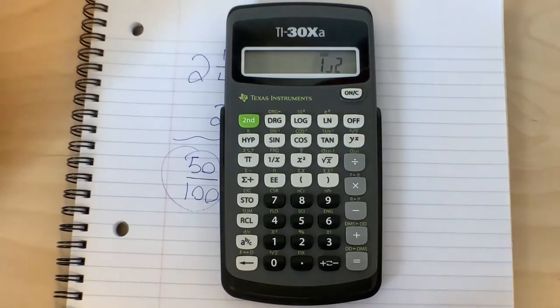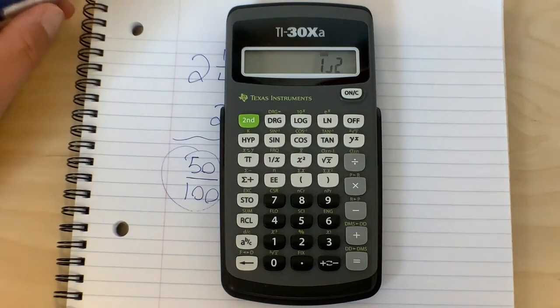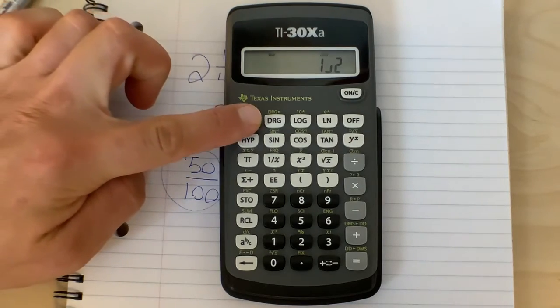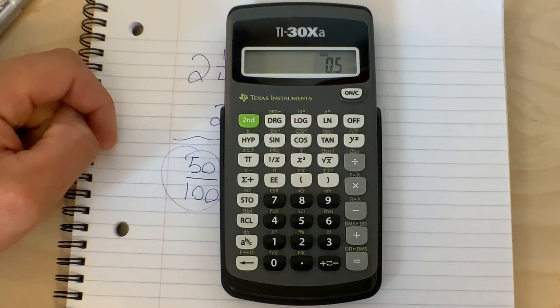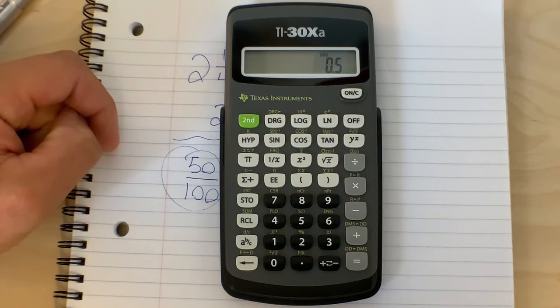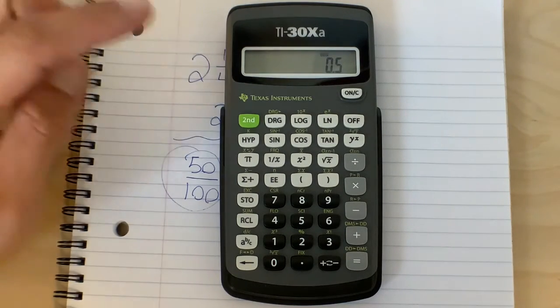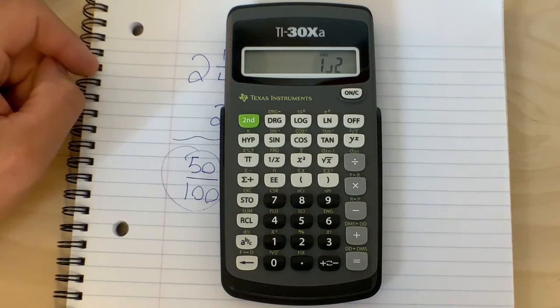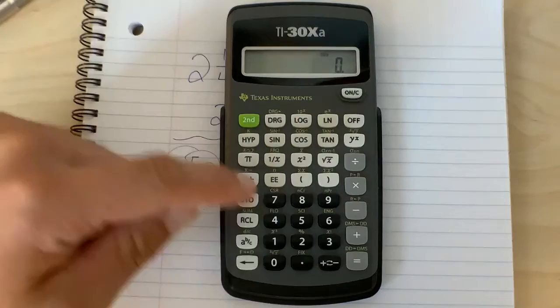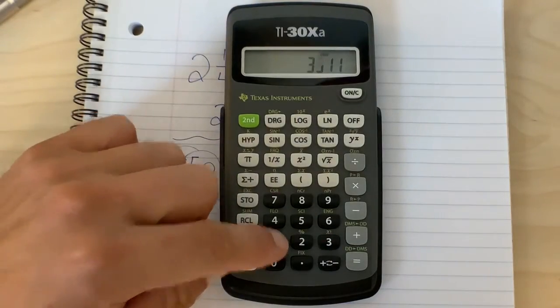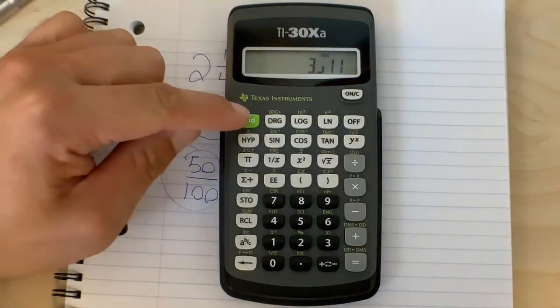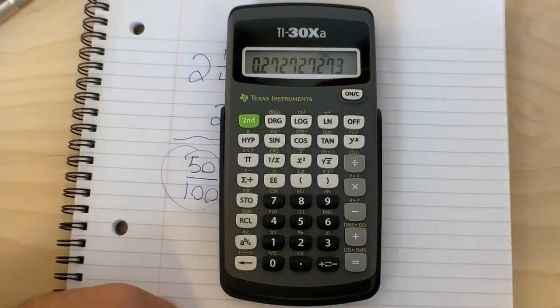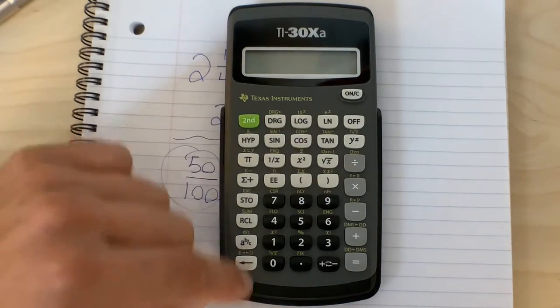We have one half in the calculator. I want to convert that to a decimal, so I'm going to press second function and then the arrow, and that's going to convert that to 0.5. Now I want to convert it back to a fraction. I'm going to press second function and then the arrow again, and that's going to convert that number to a fraction again. And that'll work with any fraction, like three over 11, a weird fraction like that. Second function, arrow will convert that to a decimal number, 0.27272727, and then we can convert it back. Cheers!